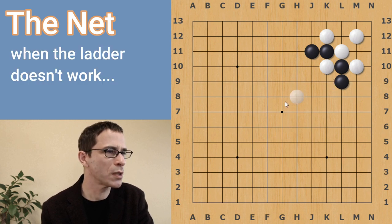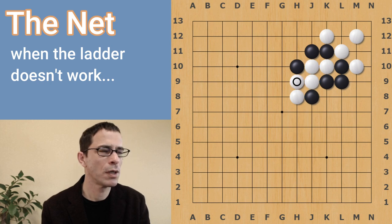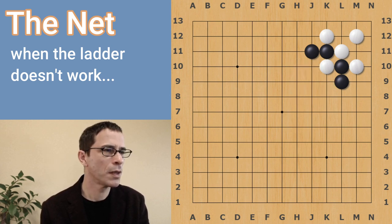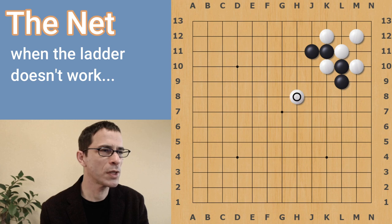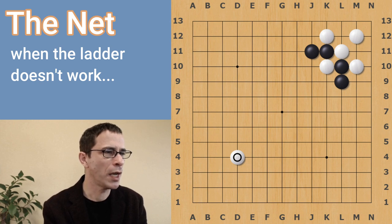For instance, if there was a white stone somewhere in the vicinity like this, this would be breaking the ladder. If black still tried to take in the ladder, then the white stones would connect up, and black's ladder would be going nowhere. It would not work. The ladder could be blocked by a stone even on the other side of the board. It would not be possible to capture the white stone in the ladder.